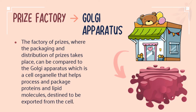Prizes make your visitors happy, thus making them come often to Yukar Park. Hence, we have our very own price factory, which is similar to the Golgi Apparatus. The factory where the packaging and distribution of prizes takes place can be compared to the Golgi Apparatus, which is a cell organelle that modifies, collects, packages, and distributes molecules made at one location of the cell and used at another.